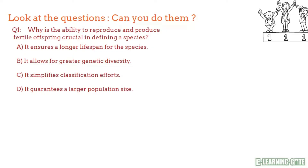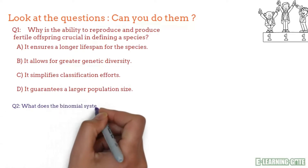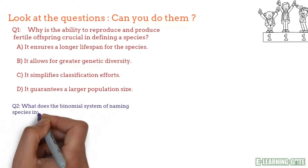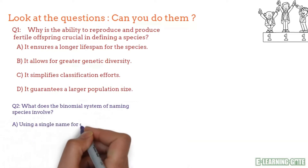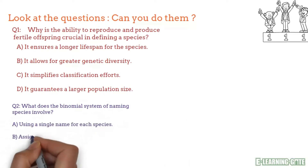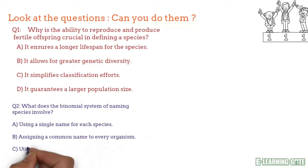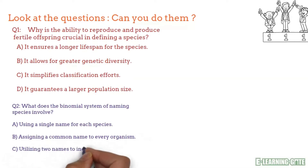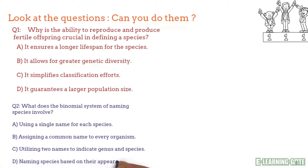Now look at question number two: What does the binomial system of naming species involve? Only one option is correct. Think and note down your answer.